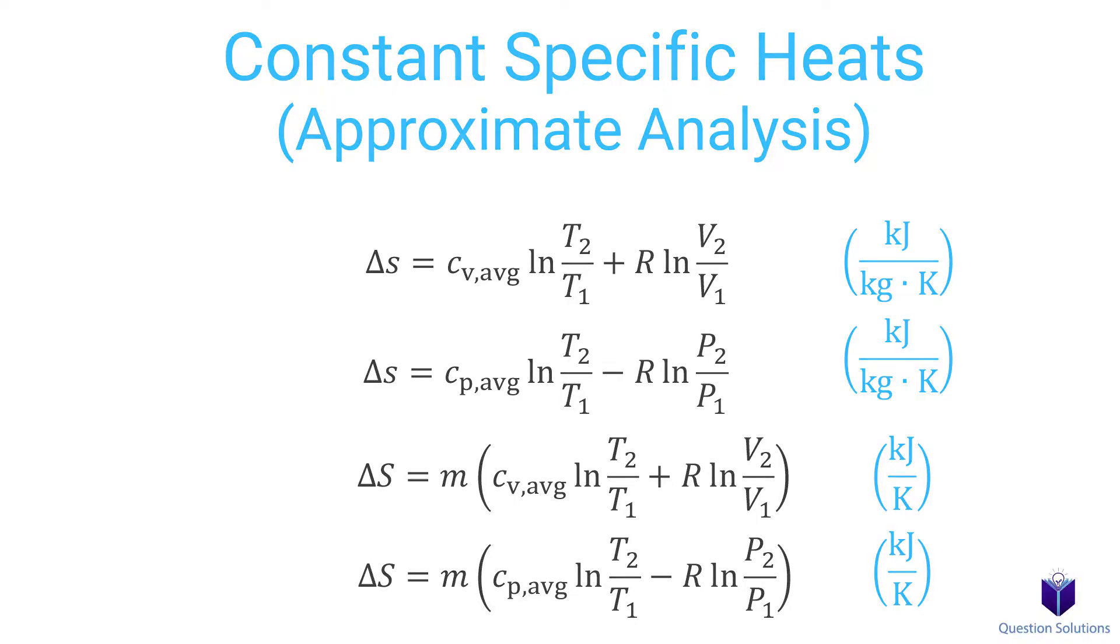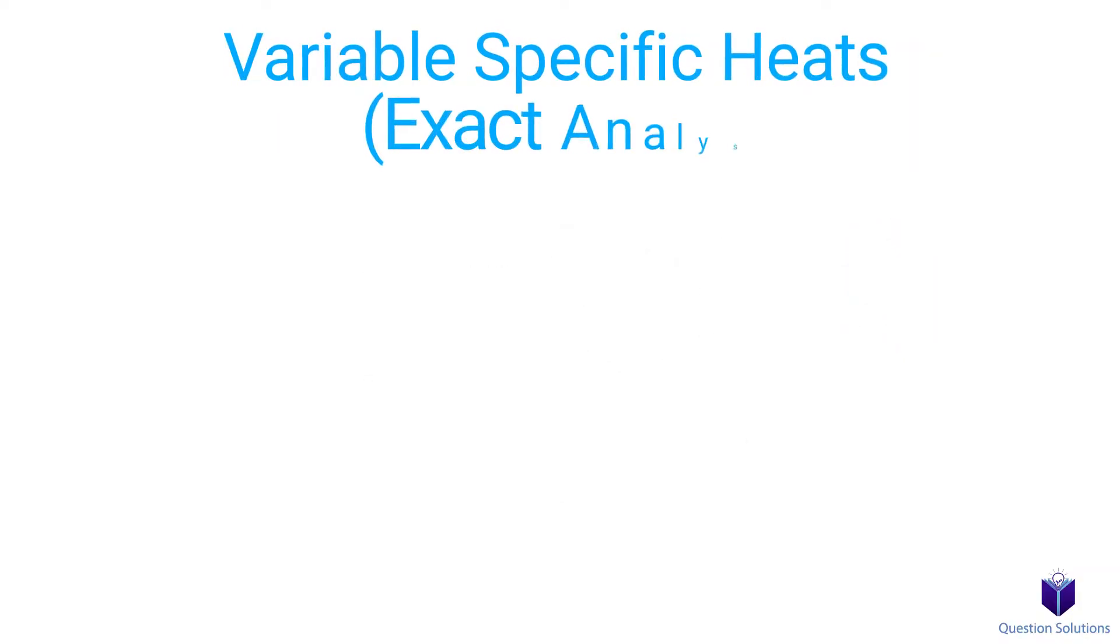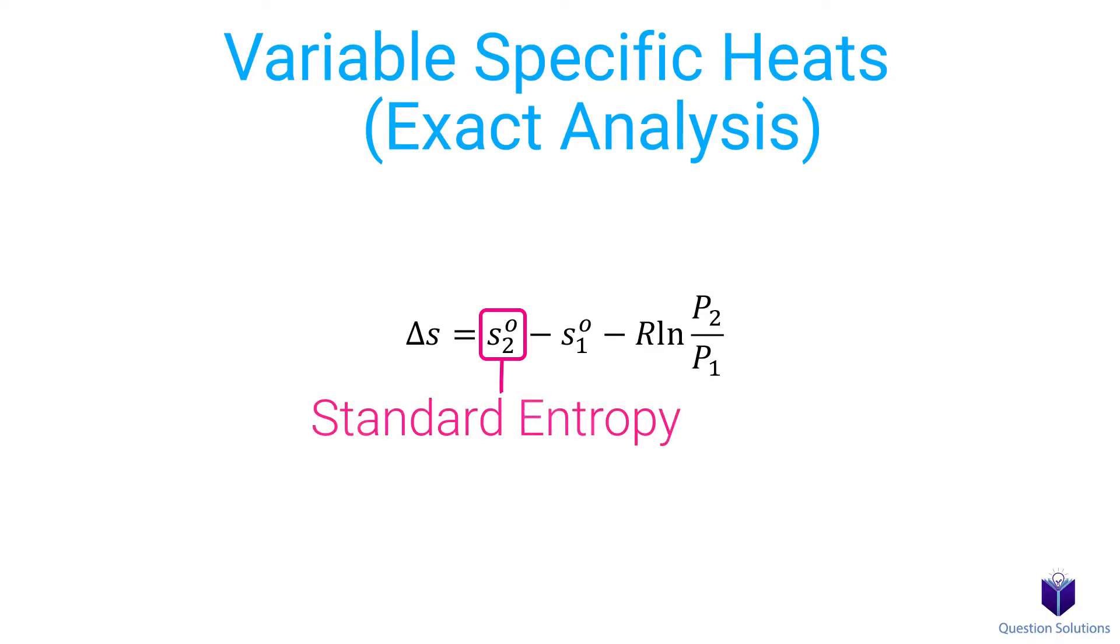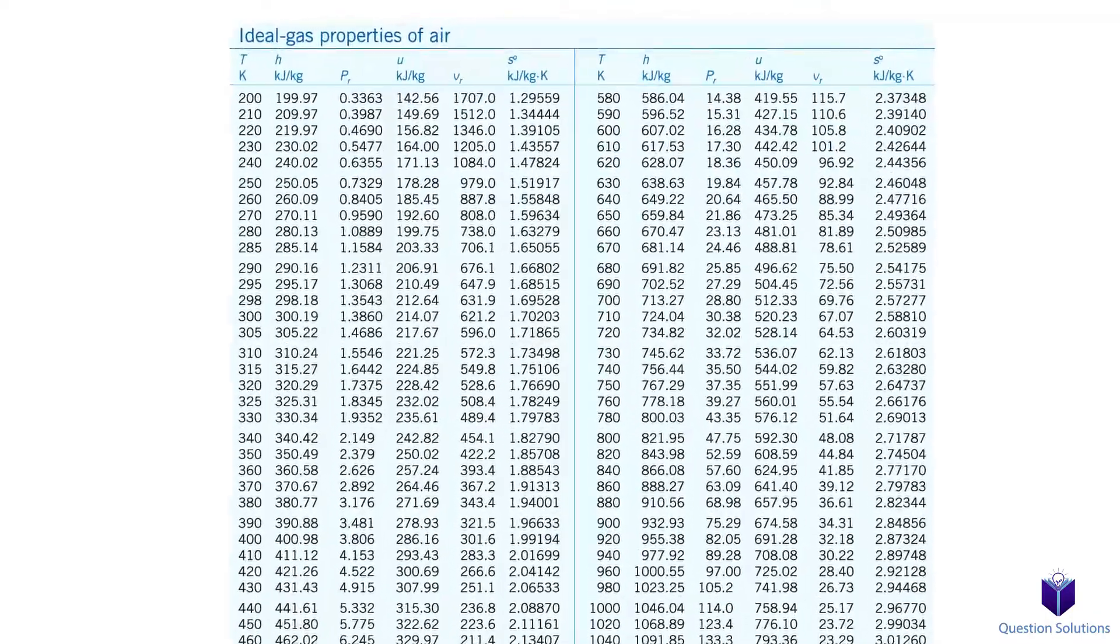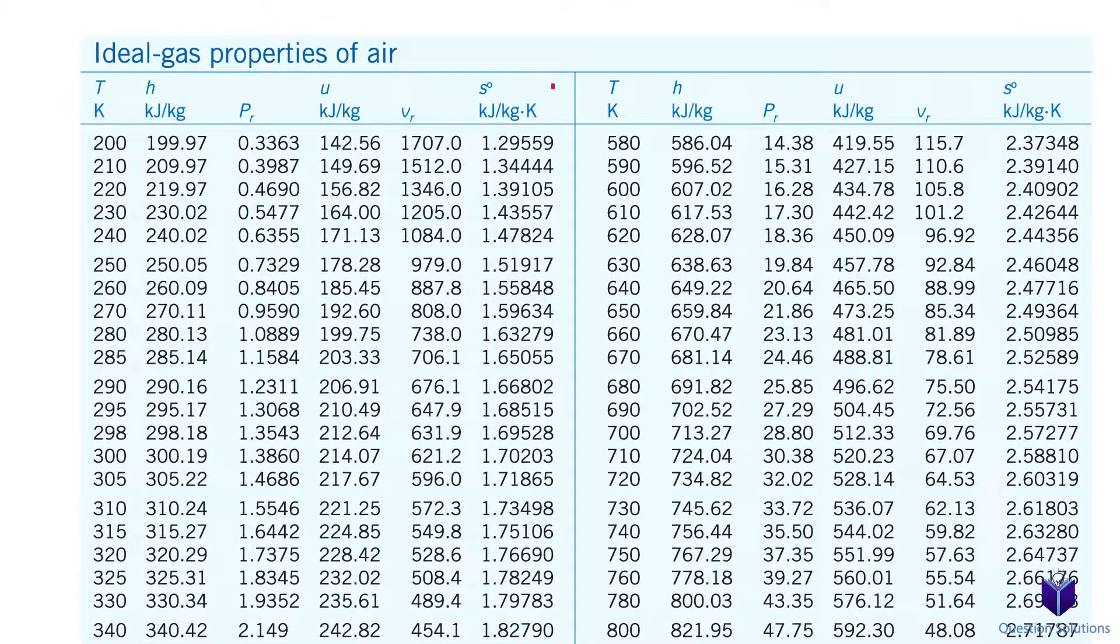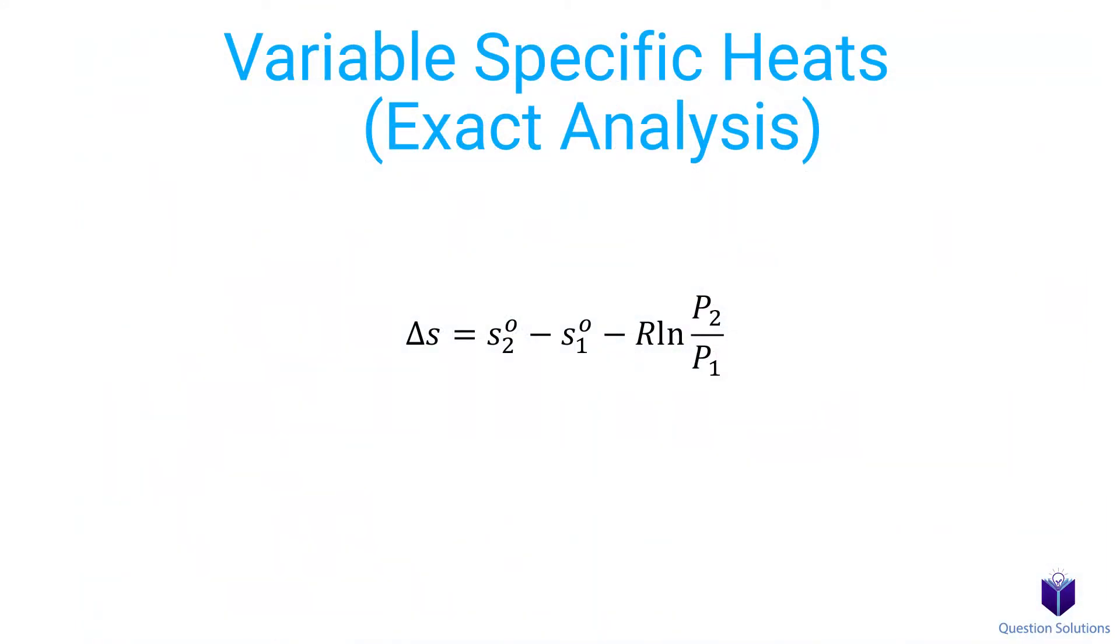The second method is usually used when the temperature change during a process varies by a large amount. The equation you'll use is this one. The S symbol with a little circle on top is normally called the standard entropy. You can find these values on tables already tabulated. The standard entropy values account for temperature dependence on entropy, but entropy also varies with pressure. That's why this part is attached to the equation to account for the entropy change due to varying pressure.